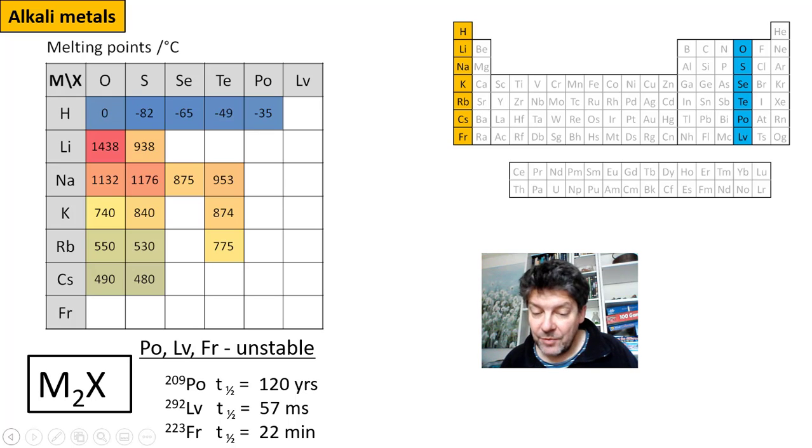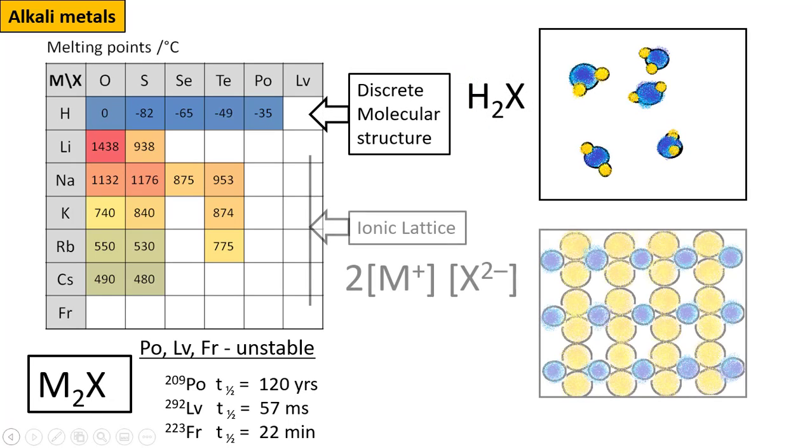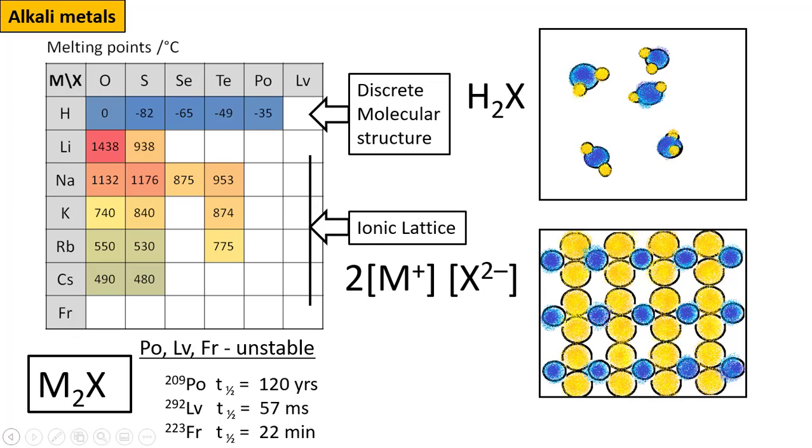Now it's clear. All the compounds with hydrogen have relatively low melting points. And that is related to their structure. The arrangements of atoms in these compounds. In fact, they are all discrete molecular species. By contrast, all of the other compounds have a much higher melting point. And that is a reflection of their structures. These compounds are composed of arrays of charged atoms. Arrays of charged ions.